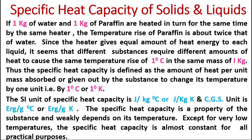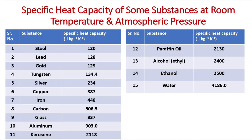Now let us understand the specific heat capacity of some substances at room temperature and atmospheric pressure. Here are some examples of substances along with their specific heat capacity values in joules per kg per degree Kelvin.